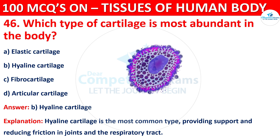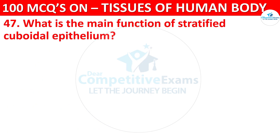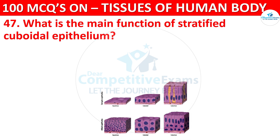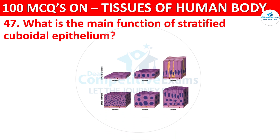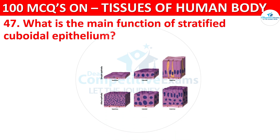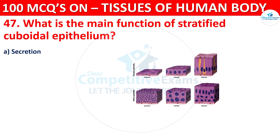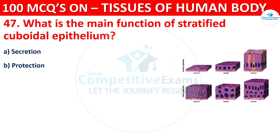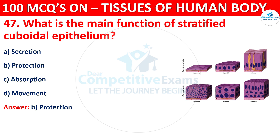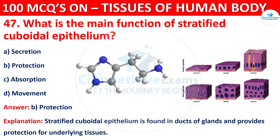Question number 47. What is the main function of stratified cuboidal epithelium? Options are Secretion, Protection, Absorption, or Movement. The correct answer is B, that is Protection. Stratified cuboidal epithelium is found in the ducts of glands and provides protection for underlying tissues.